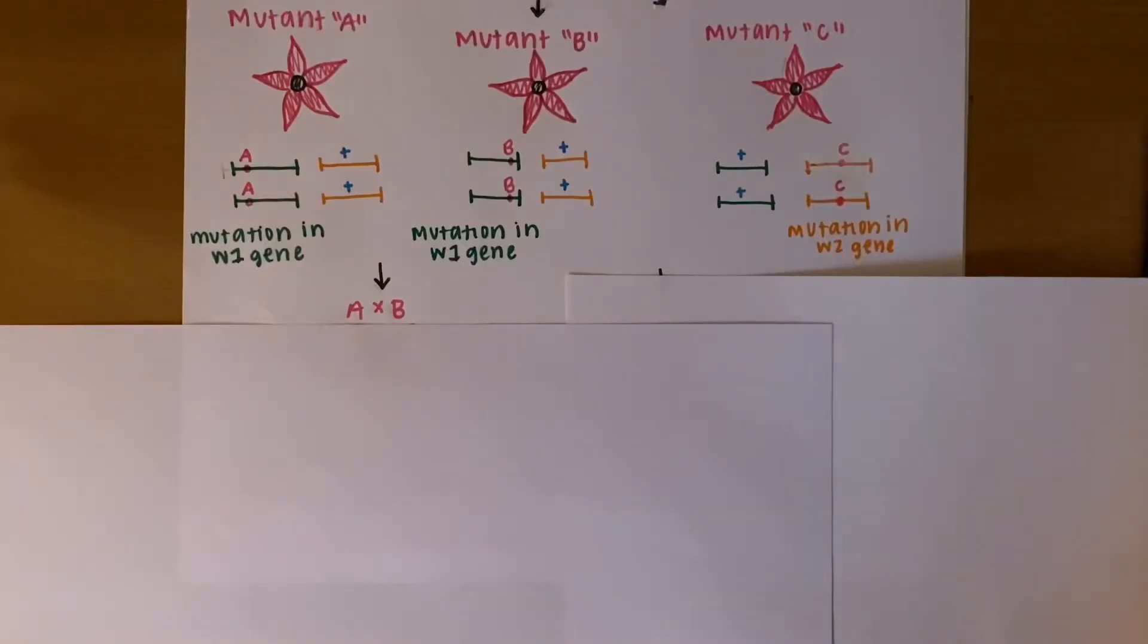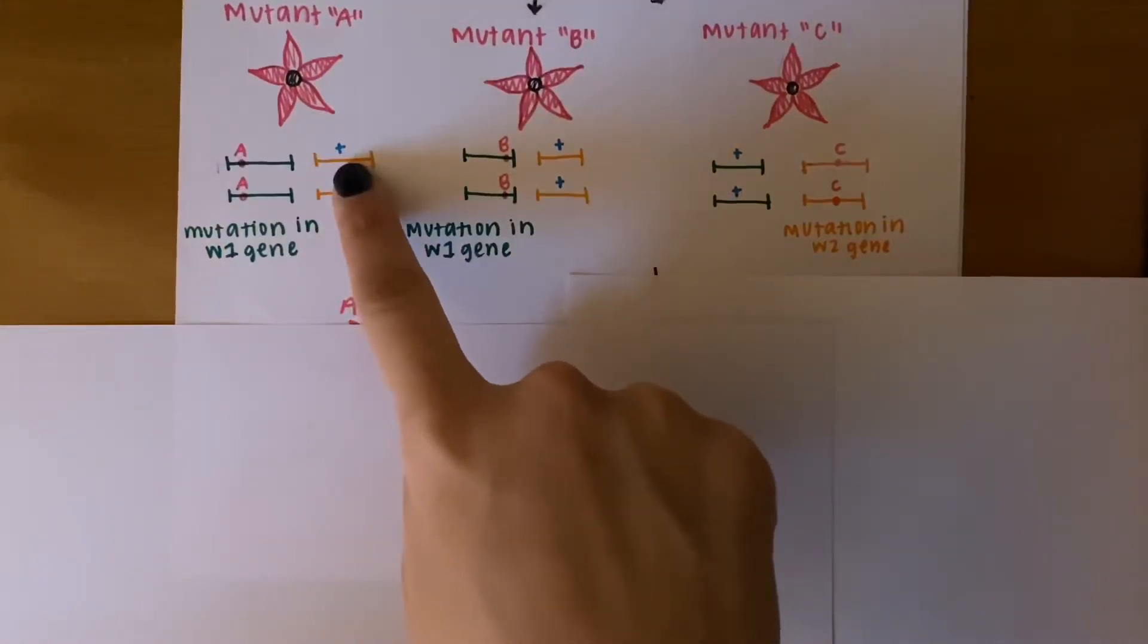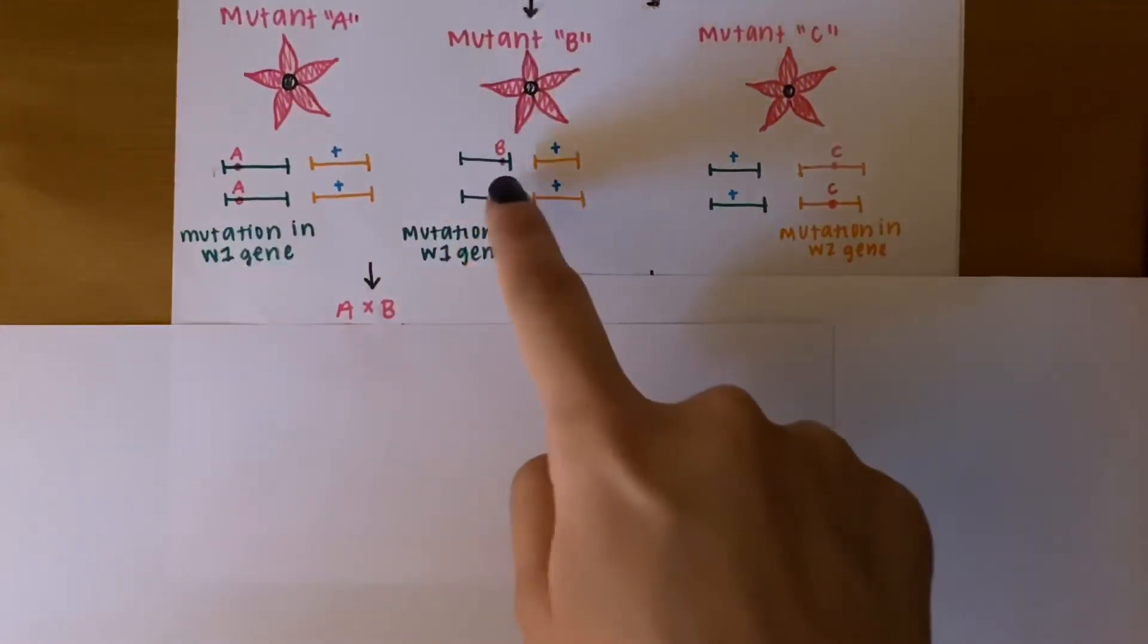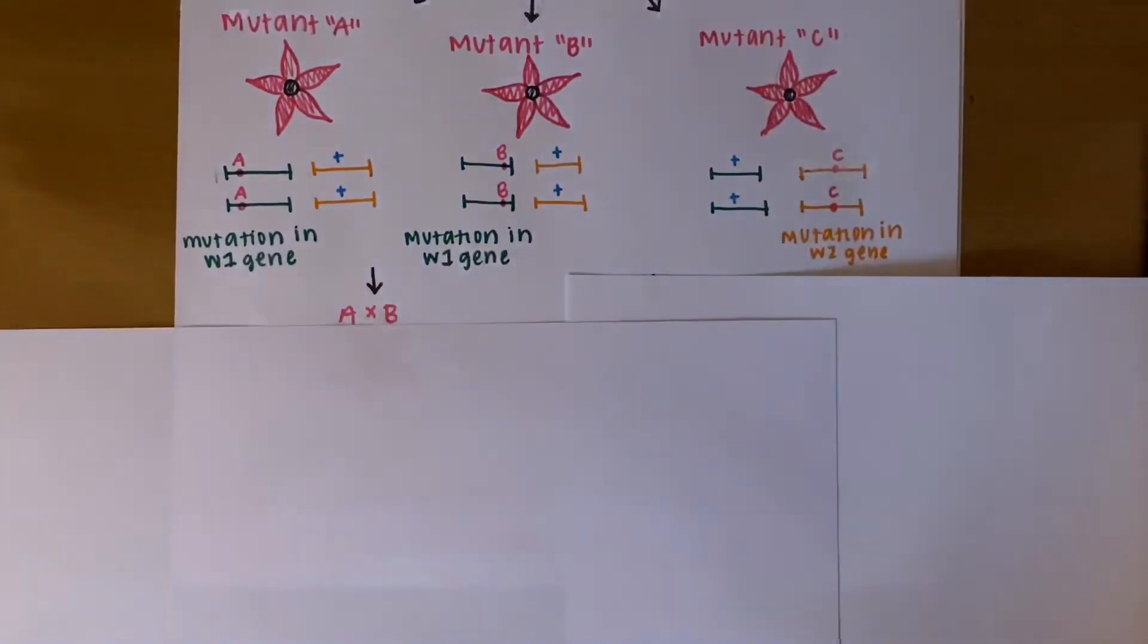First, let's do A cross B. We would take one allele from the W1 gene in A and one allele from the W2 gene in A. We would take the same from B, one from W1 and one from W2.